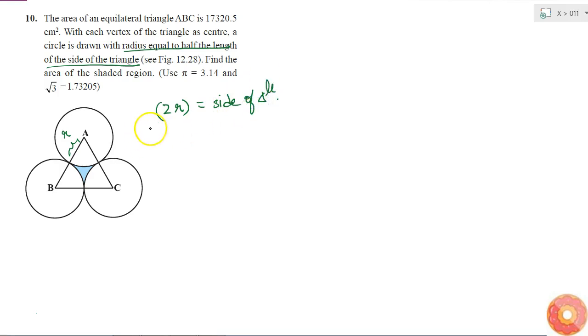I know that area of an equilateral triangle is equal to root 3 by 4 into side square. So, if this is equal to 17,320.5 cm², what will be here if I put side is equal to 2R, then I'll get root 3 by 4 into 2R whole square, that is 4R square is equal to 17,320.5 cm². If I cancel 4 from here and here, then I'll get root 3 into R square is this.